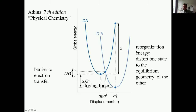The reorganization energy is defined as the energy needed to distort one state to the equilibrium geometry of the other state. It is the energy related to the change of nuclear coordinates between the starting state and the product state. Together with the driving force, there is also the barrier — the activation energy.